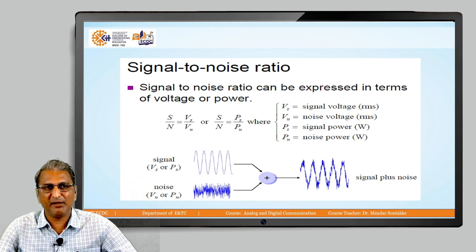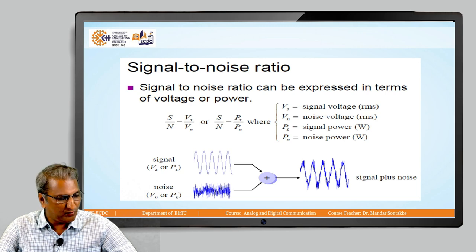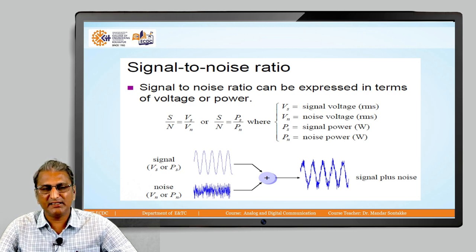See the diagram, the summation sign is there and upper diagram is signal, either it is Vs or Ps, and the noise is added. It is denoted by either Vn or Pn. And at the output of the summer, we have the signal plus noise.